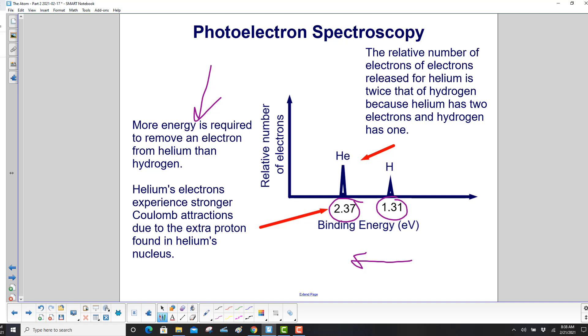Helium's electrons experience stronger Coulomb attractions due to the extra proton that helium has. The relative number of electrons released for helium is twice that of hydrogen, because helium has two electrons and hydrogen has one. So this should be around one and this should be around two in relative terms here.